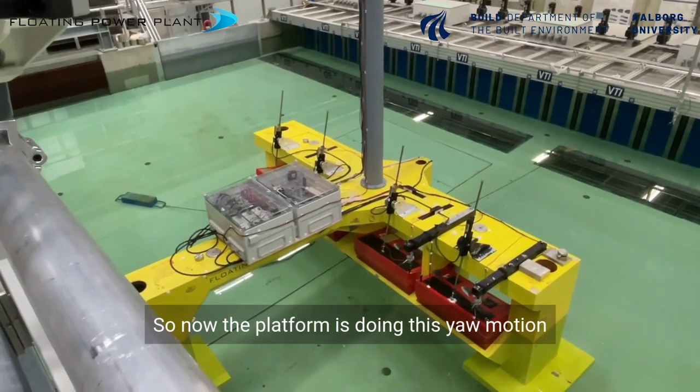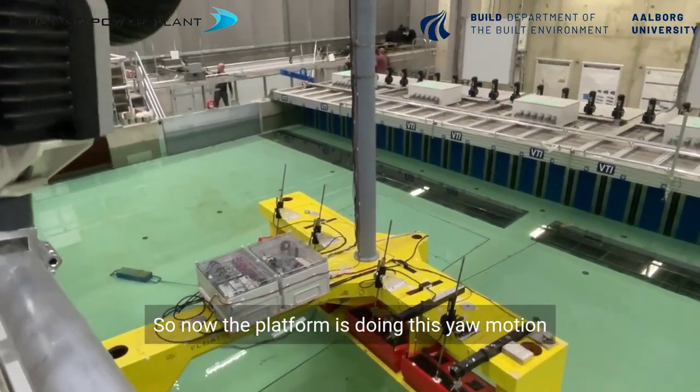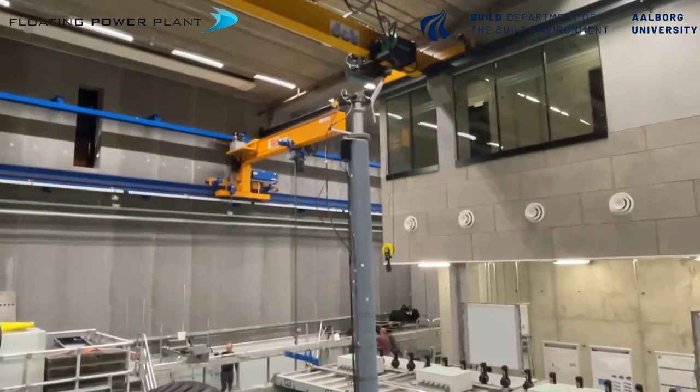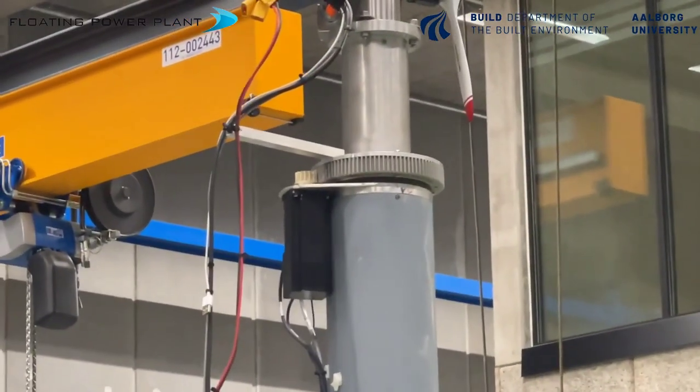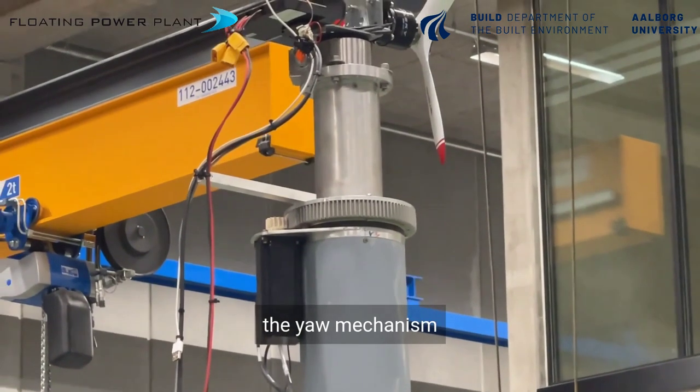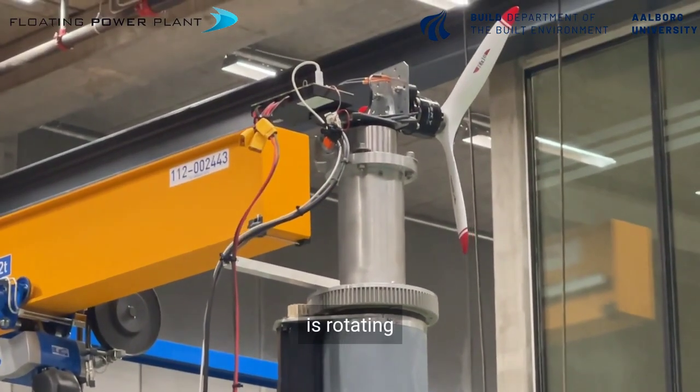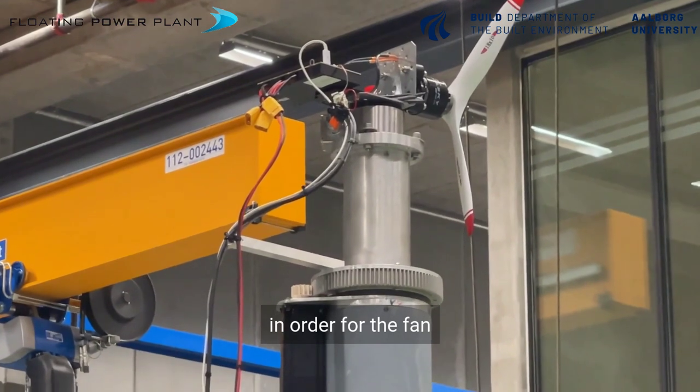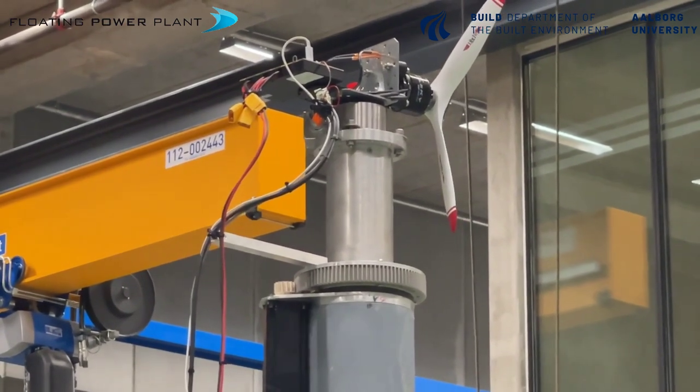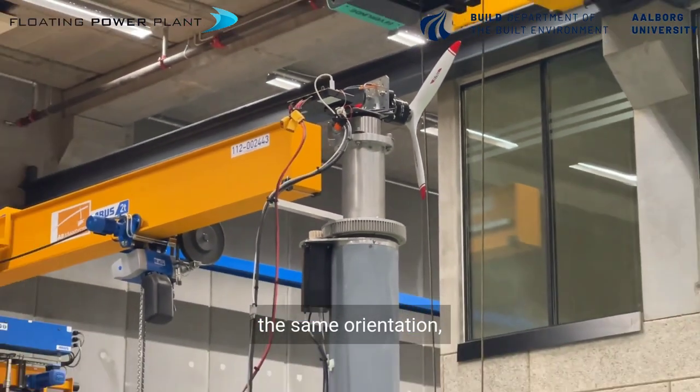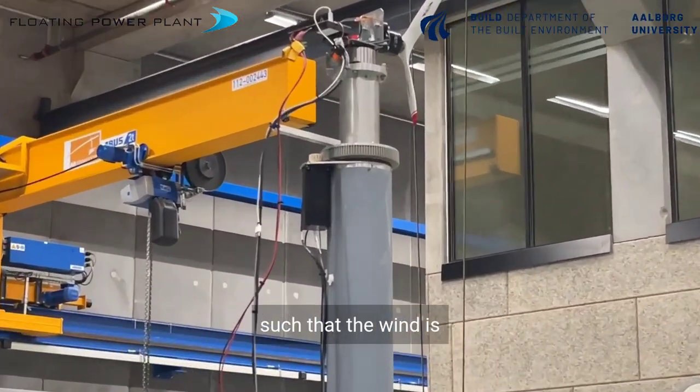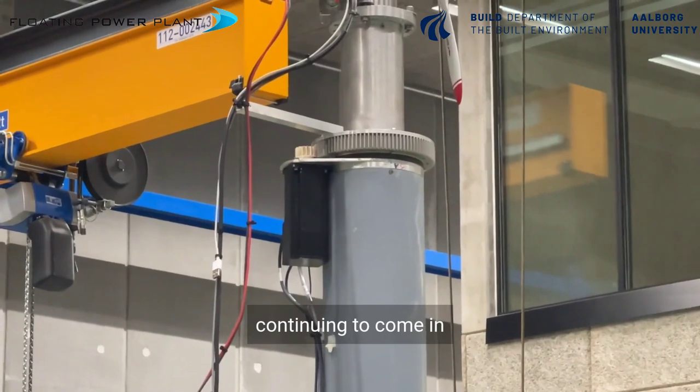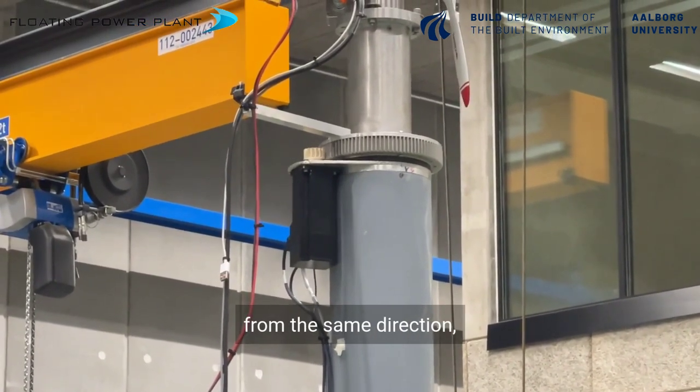So now the platform is doing this yaw motion and the yaw mechanism is rotating in order for the fan to maintain the same orientation such that the wind is continuing to come in from the same direction.